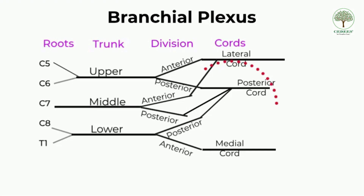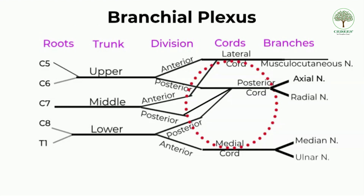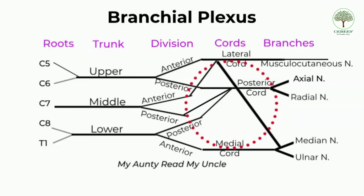The terminology lateral, posterior, and medial is based on the location of the cords with reference to the axillary artery. The terminal branches from the cords are: the musculocutaneous nerve from the lateral cord; the axillary nerve and radial nerve from the posterior cord; and the median and ulnar nerves from the medial cord. You can use the mnemonic 'My Auntie Read My Uncle' to remember the names of these nerves.